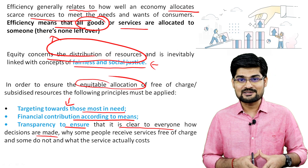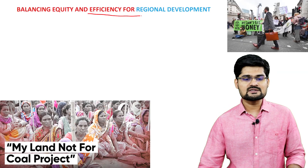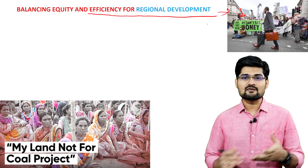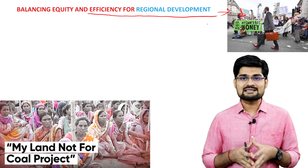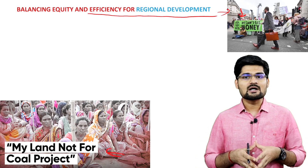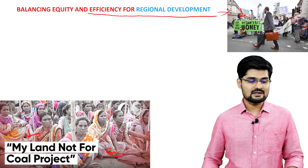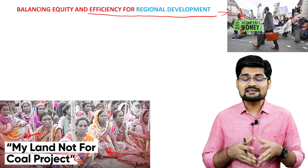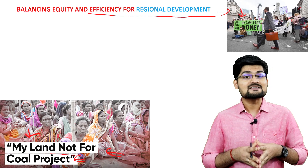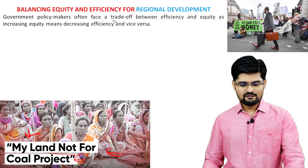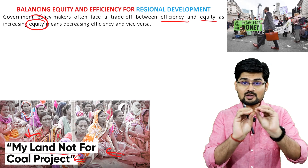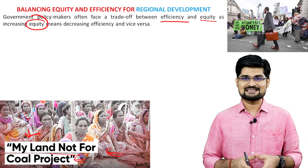When balancing equity and efficiency for regional development, you can see these movements of people — people saying 'we can't eat money', protesting against capitalism, and local people whose resources are being drained by outsiders, with signs like 'my land not for coal project.' Governments and policymakers often face this trade-off between efficiency and equity, as increasing equity by giving equitable resources may sometimes reduce the efficiency of the system.